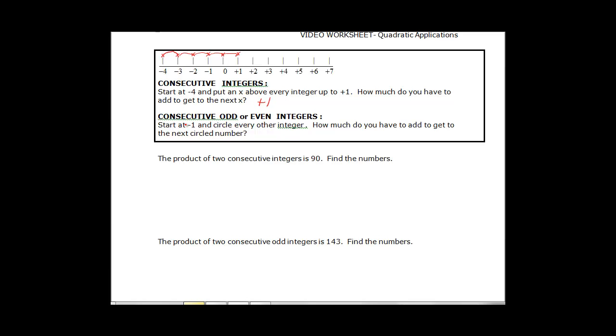Well consecutive odd and even integers, let's start with the consecutive odd because those are the funny ones. So we start here at negative 1 and we skip every other. So we skip the 0 go to 1,